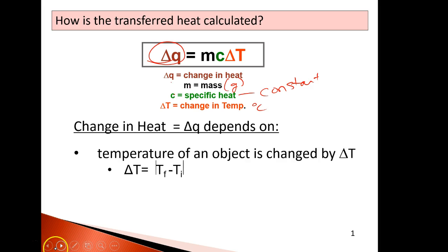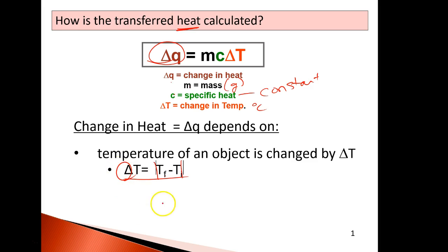The change in heat depends on the temperature. The way we calculate delta T is we take the absolute value of the final temperature minus the initial temperature, because heat is due to a difference in temperature, and difference means subtract. We use absolute value to make the math a little bit easier, so you'll never have a negative number.